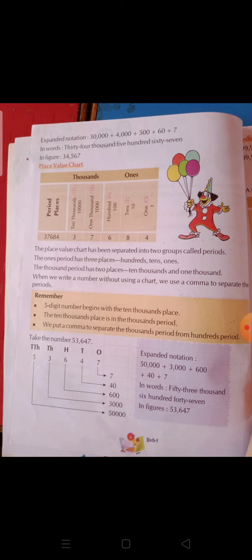The place value chart has been separated into two groups called periods. Here we have two separate groups which we call periods. The ones period has three places: hundreds, tens, and ones.